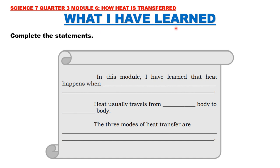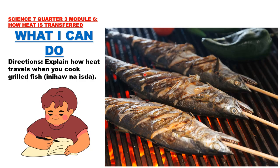What I Have Learned. Let us complete the following statements. Number 1: In this module, I have learned that heat happens when... Second statement: Heat usually travels from blank body to blank body. And third statement: The three modes or methods of heat transfer are... Next, What I Can Do. Explain how heat travels when you cook grilled fish or inihaw na isda. In your answer sheet, you are going to explain how heat travels as you cook fish.